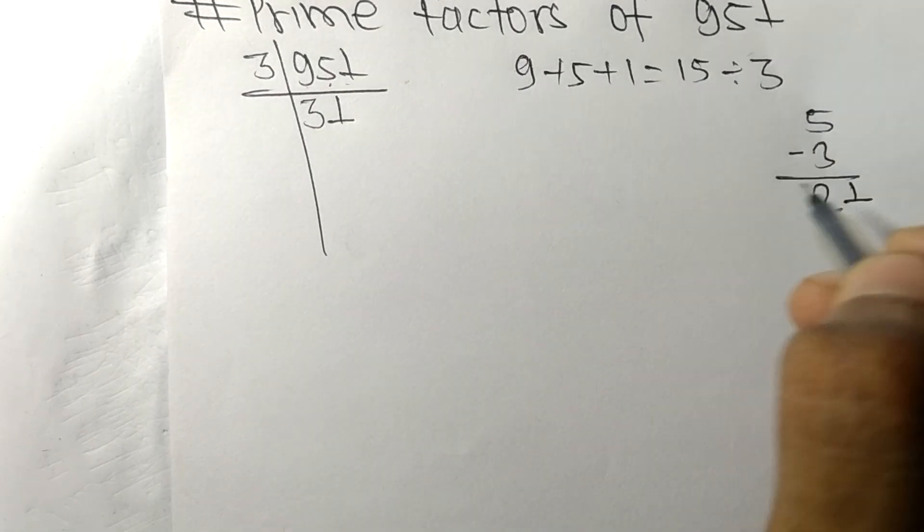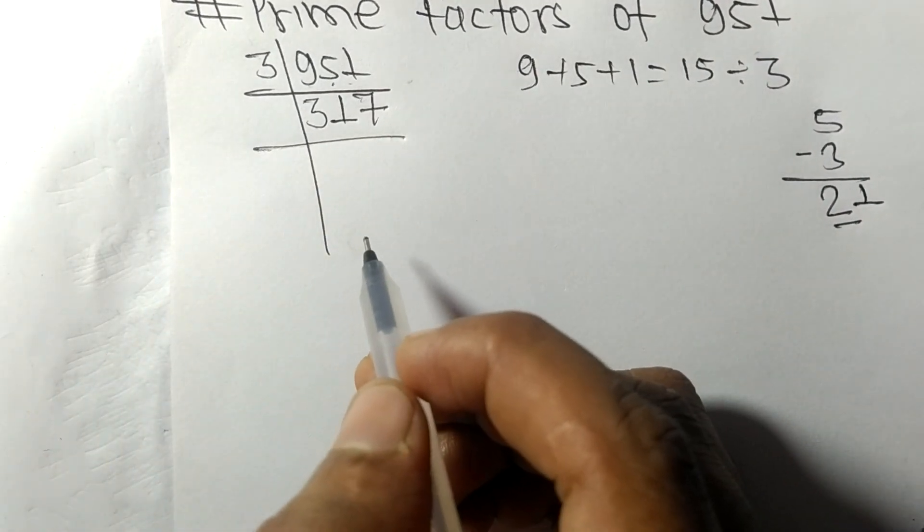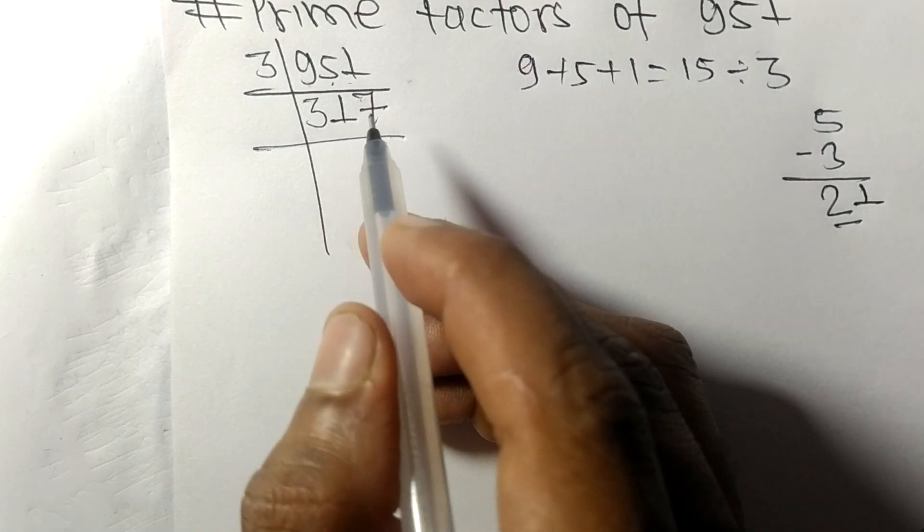This one, 21. 3 times 7 means 21. So now we got 317 which is a prime number, so it is exactly divisible by 317 only.